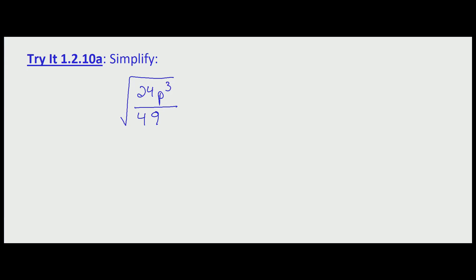So again, surprise! More simplifying radicals. In this case, we're asked to simplify the square root of 24p cubed over 49.